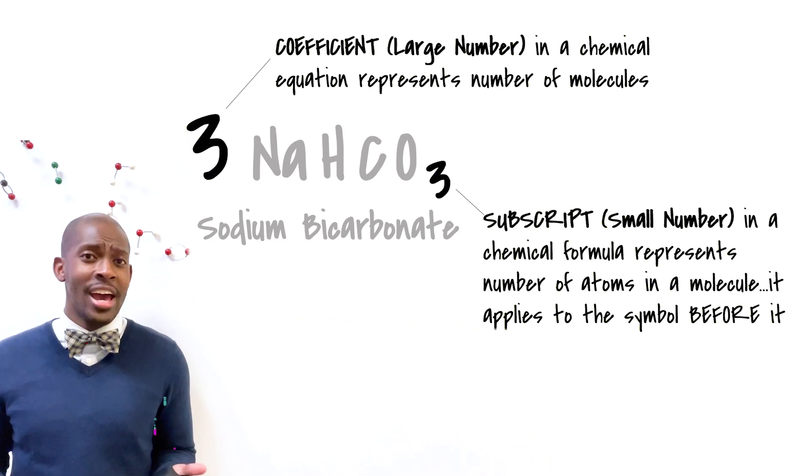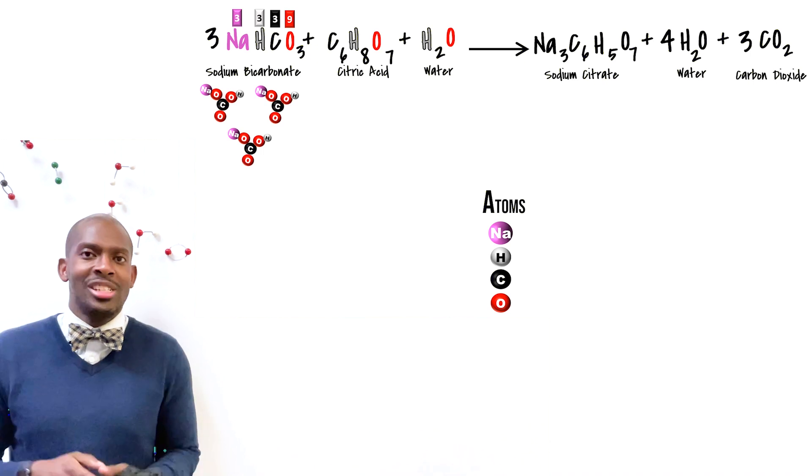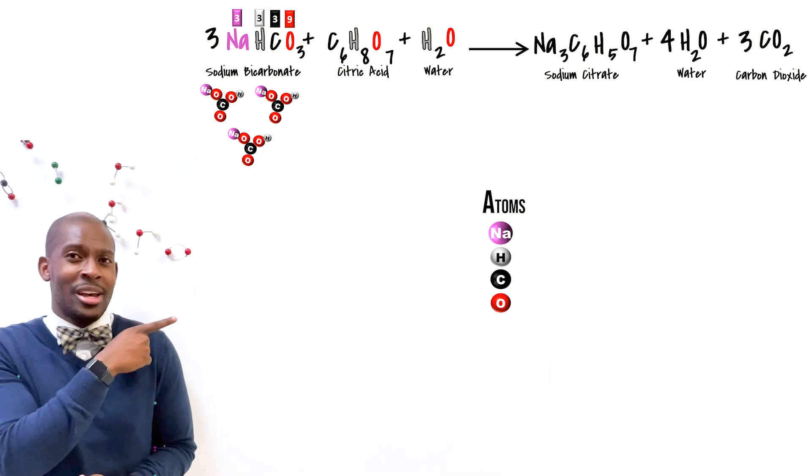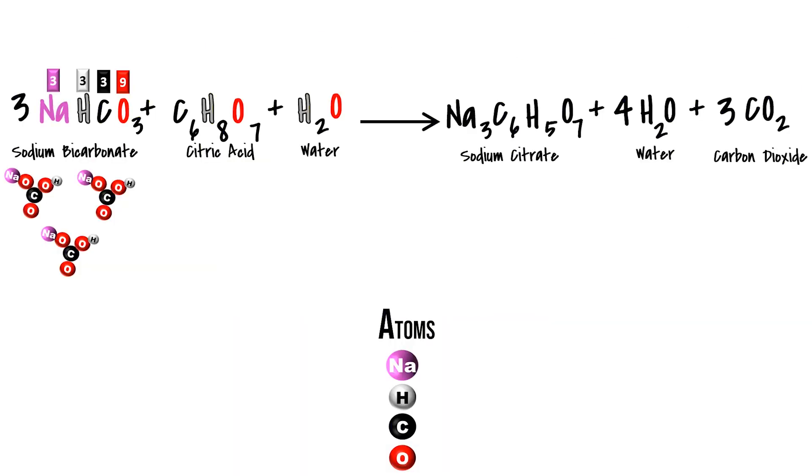If we had three molecules, that means within those three molecules we had three sodiums, three hydrogens, three carbons, and nine oxygens. To make it simple, we can just multiply the coefficient by every subscript in that formula. If you don't see a subscript, it's one.